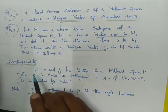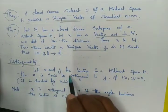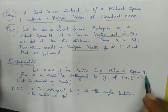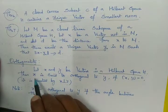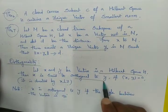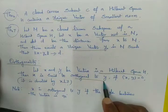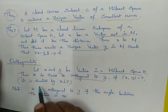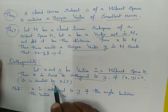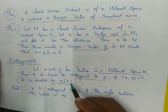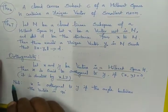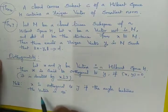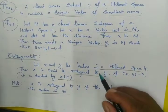Let X be a closed linear subspace of a Hilbert space H. Let X be a vector not in M, and let D be the distance from X to M. Then there exists a unique vector Y₀ in M such that ‖X − Y₀‖ = D. Orthogonality: Let X and Y be vectors in Hilbert space H. Then X is said to be orthogonal to Y, written (X, Y) = 0, denoted X ⊥ Y. If X is orthogonal to Y, the angle between the vectors is 90 degrees.